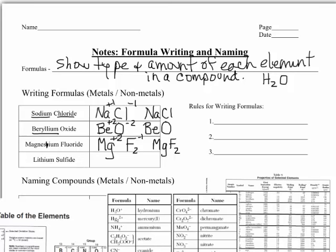Let's do one more. Lithium is Li, and it is a plus one. Sulfur — sulfide, that's the binary form — is minus two. Sulfur would really like two electrons, but lithium is only going to give up one. In order to satisfy both of them, we're going to need two lithium atoms. So the final formula is Li2S.